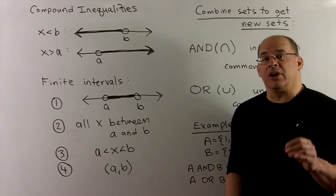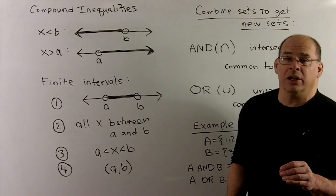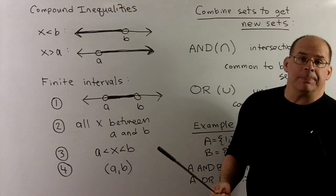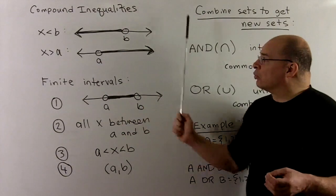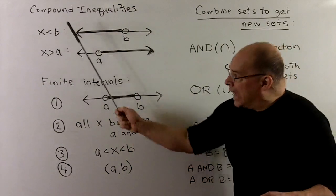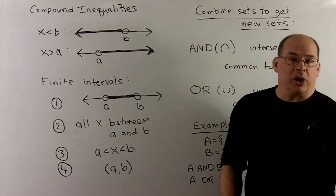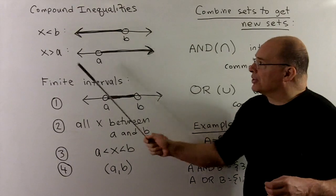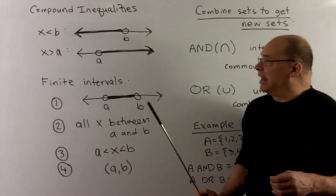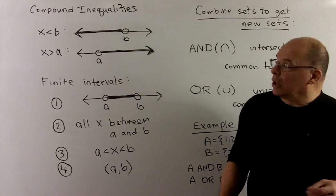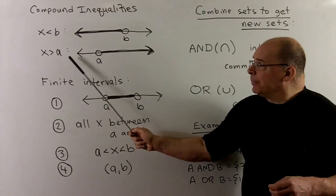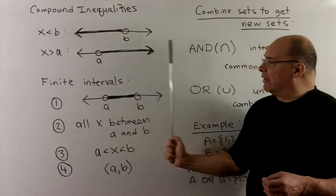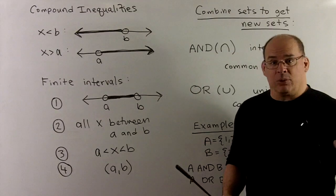For this section, we advance the theory of linear inequalities from the previous section to compound inequalities. In the previous section, we considered subsets of the real number line in these forms. We had x less than b, which means x to the left of b — we mark off b with an open circle and shade everything to the left. We also looked at x greater than a, shading everything to the right. Both of these give us half of the real line.